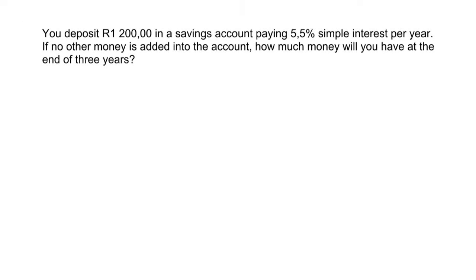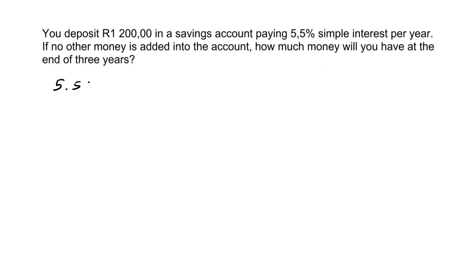This first question says that you deposit 1,200 rand into a savings account, which pays you 5.5% per year. If no other money is added, how much money will you have in three years? In this kind of question, interest is good because it's going to make your savings go up. What you'll do is take 1,200 rand and work out what is 5.5% of 1,200.